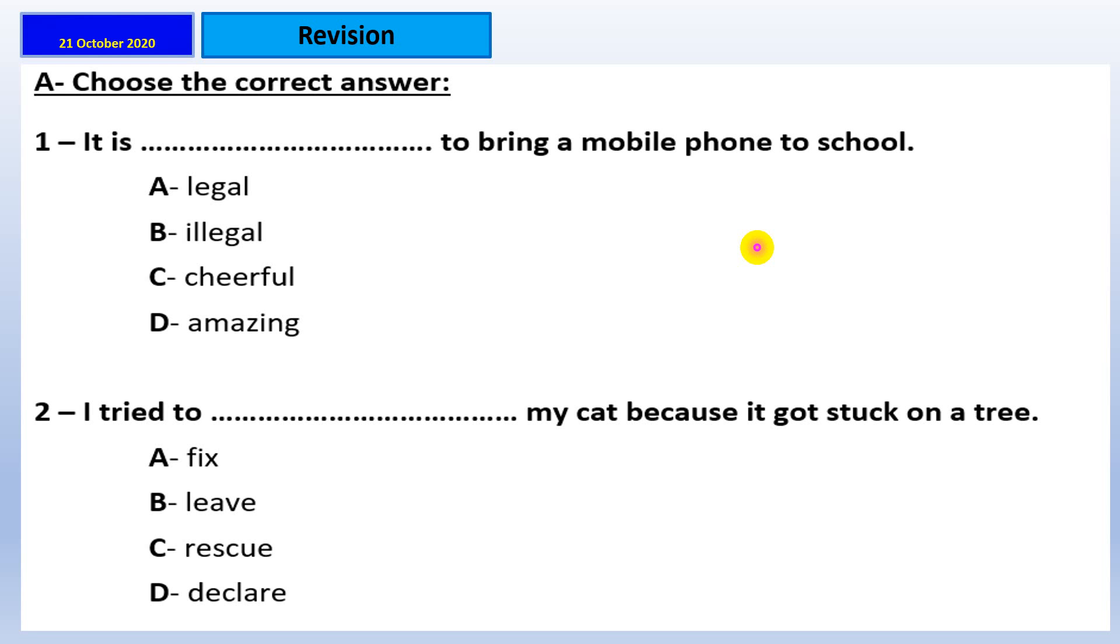Okay, now let's move on to worksheet number ten. Here we are going to practice vocabulary. Choose the correct answer here. It says, to bring a mobile phone to school. What do you think about this one? Is it legal, illegal, careful, and amazing? What do you think about this one? Okay, how can I get the answer? Again, as I told you before, read the whole sentence until you read a full stop or the question mark. Then, have a look at the sentence. If there is any keywords that can help me to answer the question, I have here bring mobile phone to school. For sure, this one is illegal. Okay, you cannot bring your phone to school.